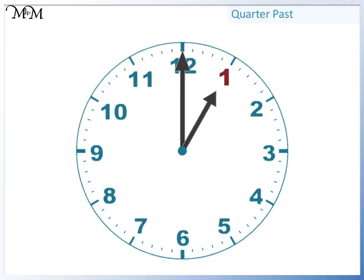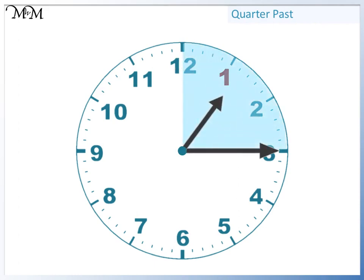The time shown is one o'clock. From here, the minute hand moves around to the three. It has moved one quarter of the way around the clock. The hour hand has moved one quarter of the way past one. The time is quarter past one.